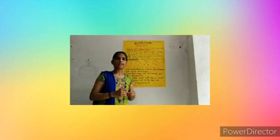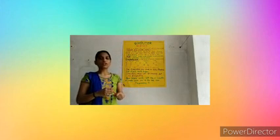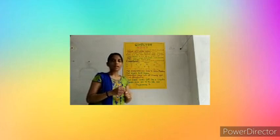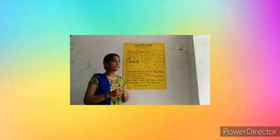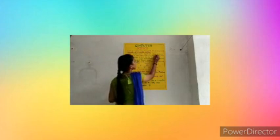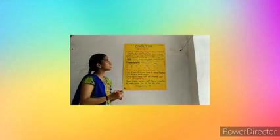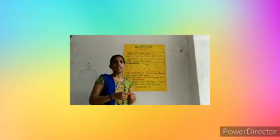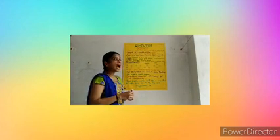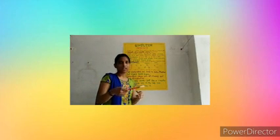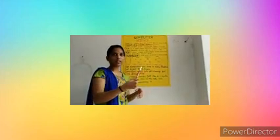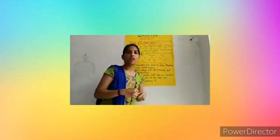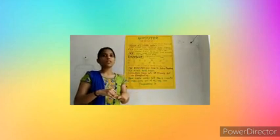ALU means arithmetic logic unit. ALU is used for operators — that is, addition, subtraction, multiplication, division, etc. This ALU is controlled by the control unit. Memory means storing the data or information, and when the user requires it, the data is given back to the user. This is known as memory. So we have completed the fundamentals of computer.